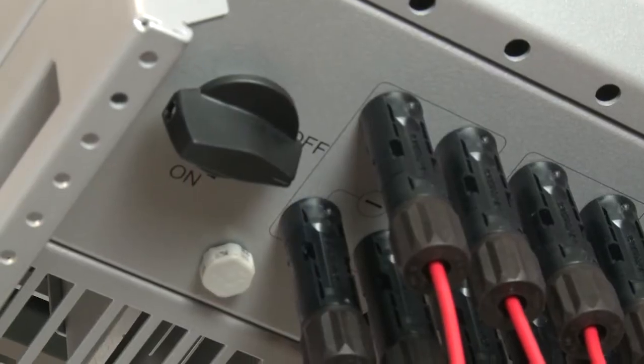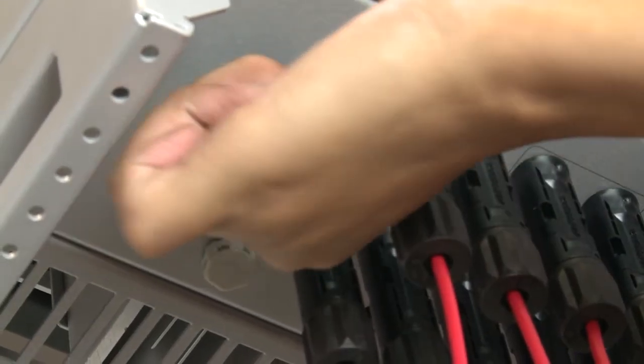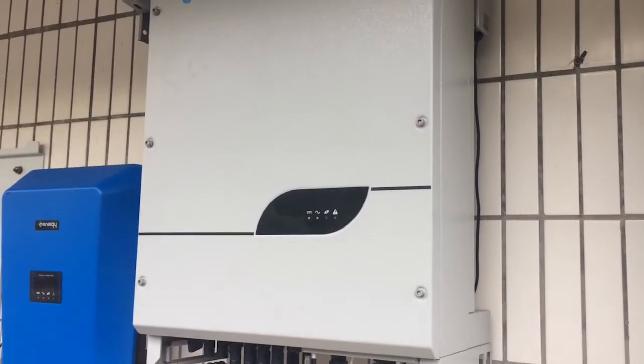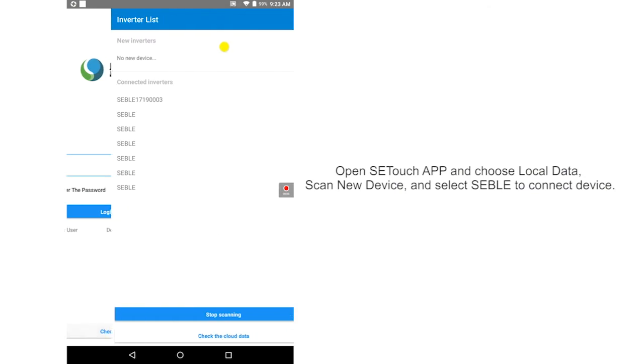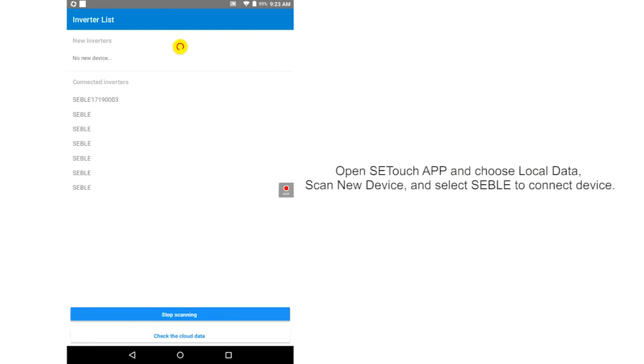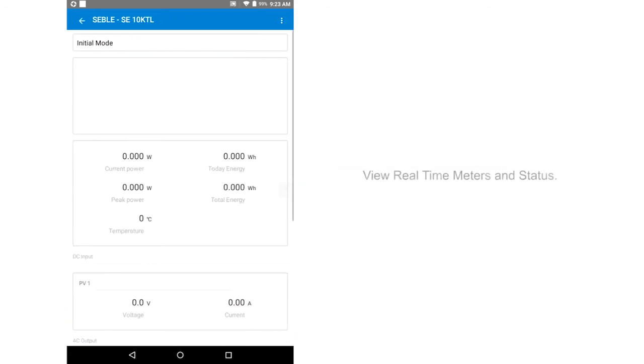Turn the DC power switch so that the inverter is powered on and the LED display screen activates. Open SETTouch app and choose local data. Scan new device and select SEBEL to connect device. View real-time meters and status.